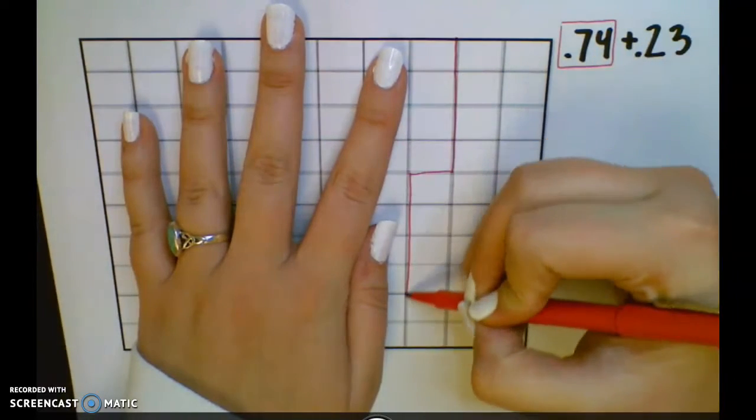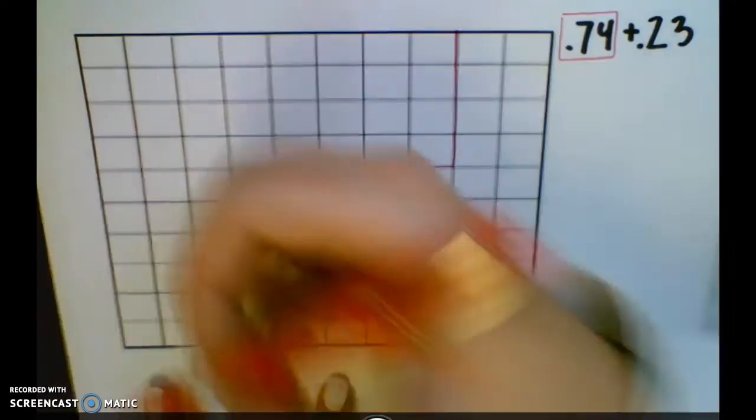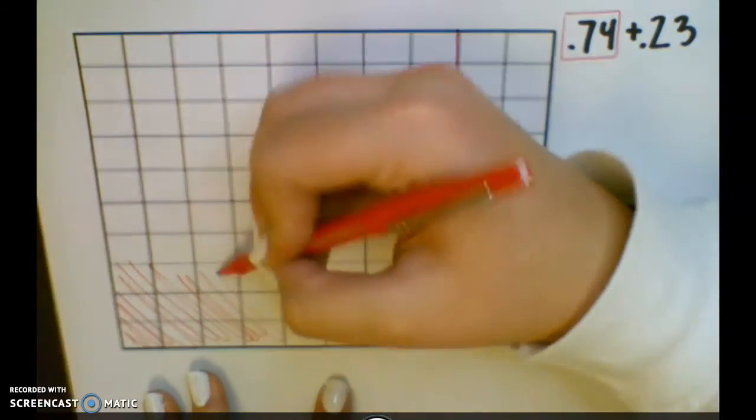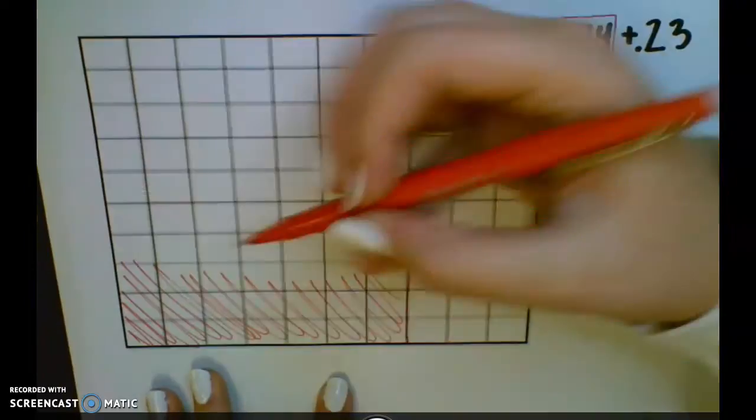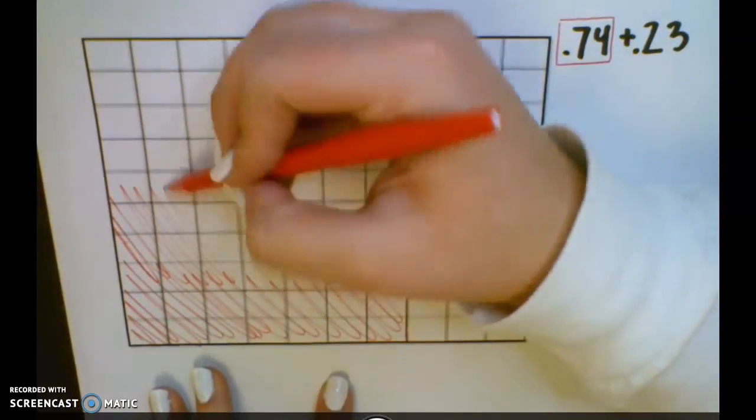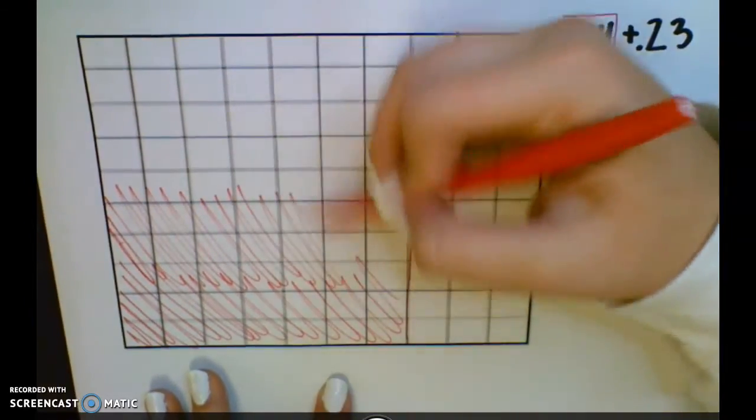I'm going to go ahead and box that out and shade the whole region very loosely. You don't need to make it perfect, it just needs to be representative of 74 hundredths.